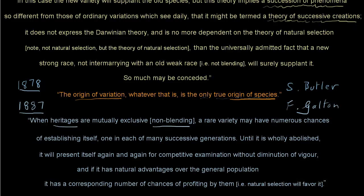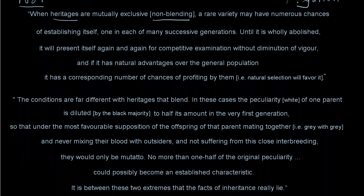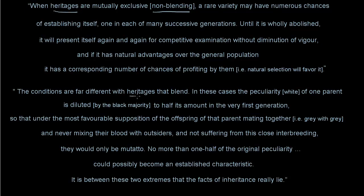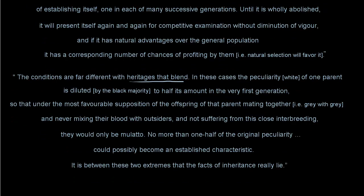With some hand-waving, he went on: the conditions are far different with heritages that blend. In these cases, the peculiarity — white — of one parent is diluted by the black majority to half its amount in the very first generation. So that under the most favourable supposition of the offspring mating together — grey with grey — and never mixing their blood with outsiders, they would only be mulatto. No more than one half of the original peculiarity could possibly become an established characteristic. It is between these two extremes that the facts of inheritance really lie.